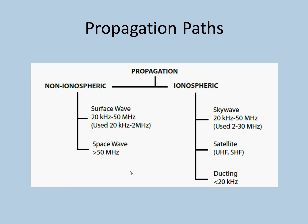So the propagation paths: there are five propagation paths which we will discuss, and they are spread into two types: non-ionospheric and ionospheric. These include surface waves, space waves, sky waves, satellite, and ducting. So this is what we will be discussing in this video.